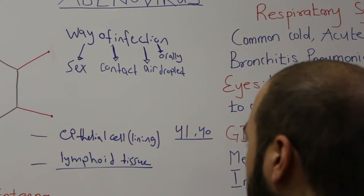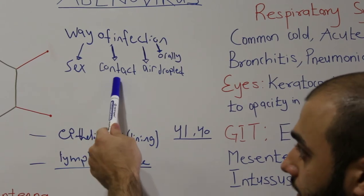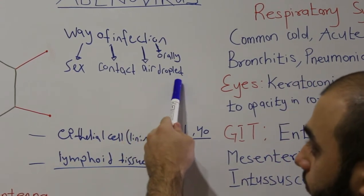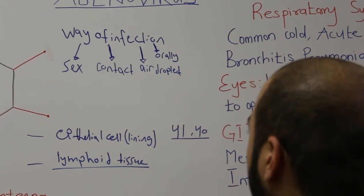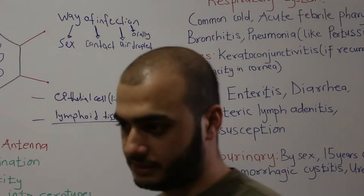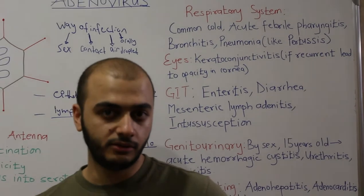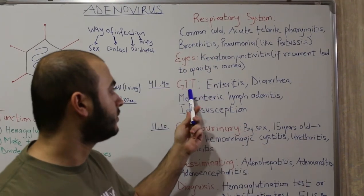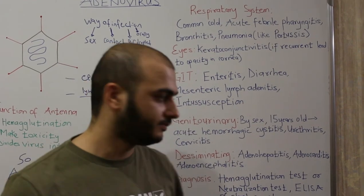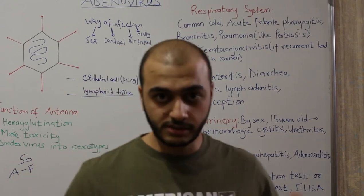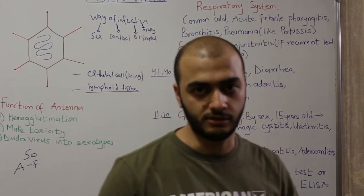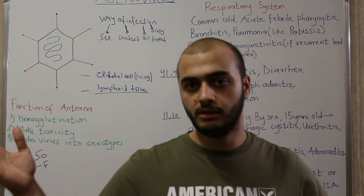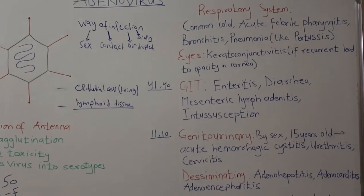In terms of routes of infection: in adults, serotype 6 is notable. For all ages, we can acquire it by contact — especially through the eye via contaminated water — through air droplets, or orally. The virus then manifests in several forms depending on the infected organ: respiratory route causes respiratory manifestations, oral route causes GI manifestations, sexual transmission causes genitourinary manifestations, and in immunocompromised patients the virus can disseminate to multiple organs.